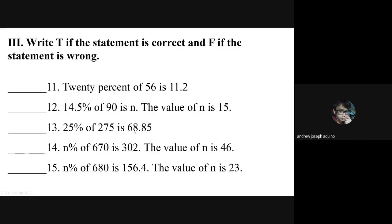In Test Number 3, write C if the statement is correct and F if the statement is wrong. Number eleven: 20 percent of 56 is 11.2. Number twelve: 14.5 percent of 90 — the value of n is 15. Number thirteen: 25 percent of 275 is 68.85.